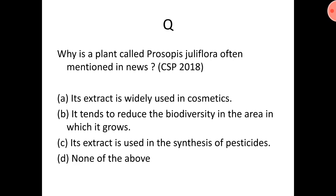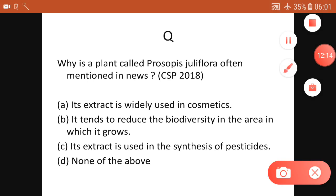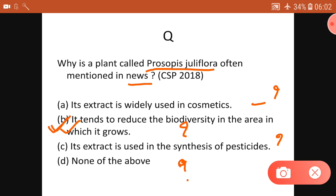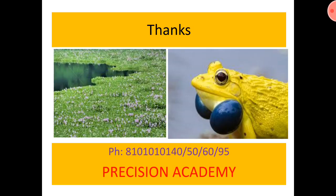A question from civil services — this is a test of awareness. Why is a plant called Prosopis juliflora often mentioned in news? The answer is it tends to reduce biodiversity in the area in which it grows. Every one of us should have awareness about invasive species. Thanks for joining; we will meet again with some other interesting topic — bye-bye.